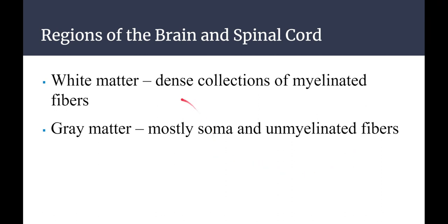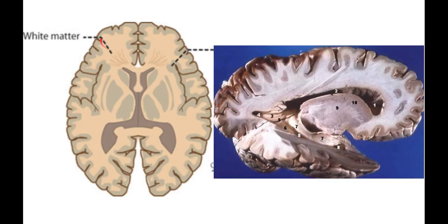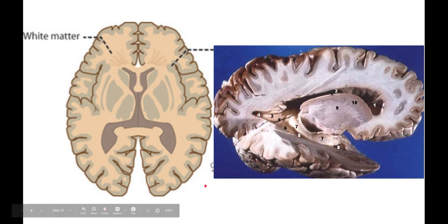Interestingly, in the brain you can actually differentiate between regions with a lot of myelinated fibers and regions with unmyelinated fibers. White matter is the dense collection of myelinated fibers. Gray matter is mostly soma and unmyelinated fibers. You can see the white matter versus gray matter clearly in brain images — think about what the benefits of having those distinct myelinated versus unmyelinated regions would be.